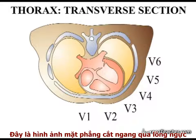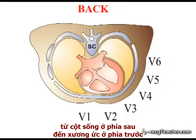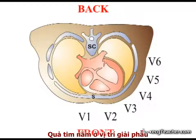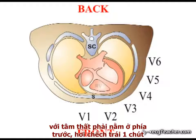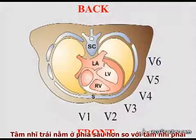This schematic depicts a horizontal section through the thorax, from the spinal column at the back to the sternum at the front. The heart is in anatomical position with the right ventricle lying somewhat anterior to the left, and the left atrium more posterior than the right.